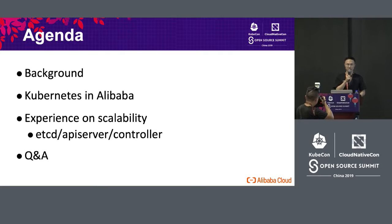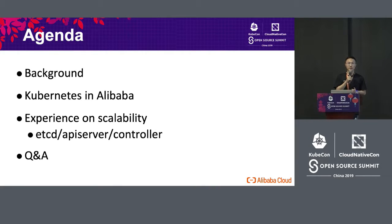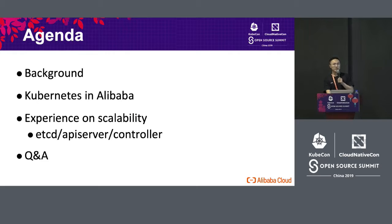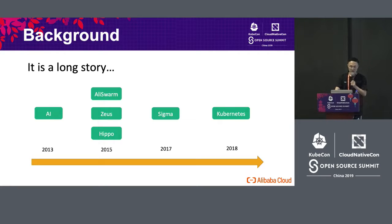If you look at the agenda, we have four parts to be covered. Number one, the background — why we need to use Kubernetes and the history of using Kubernetes. We will also talk about Kubernetes usage in Alibaba. Number three, we will talk about experiences on scalability. And we will talk about our problems in using Kubernetes in terms of API CD, API server, control and scheduling. The last part will be the Q&A session.